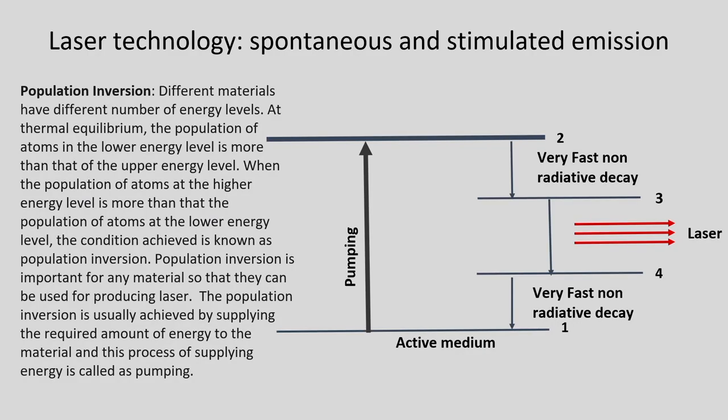Let us revise the concept of population inversion. To get stimulated emission, we should have more excited atoms at a higher quantum level. When they decay from the higher energy state to the lower energy state, they emit photons. When these photons are in phase and at a similar wavelength to passing photons, we get a coherent, monochromatic, and highly collimated beam of light — that is the laser.